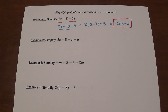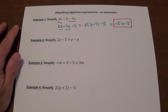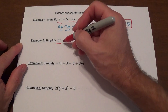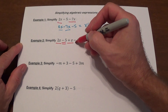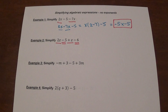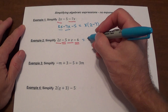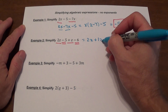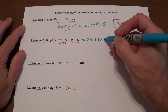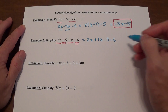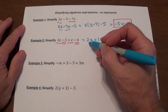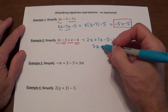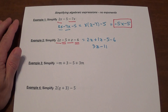Next problem: 2z minus 5 plus z minus 6. We have two terms that have z in them and two other terms that are just numbers, so those are going to be combined. I can rewrite that as 2z plus z, which is 1z, then minus 5 minus 6. These two terms together: 2z plus 1z gives you 3z. Negative 5 minus 6 gives you negative 11. This is our answer.